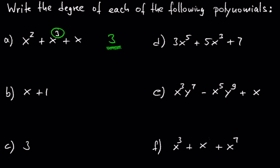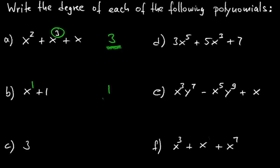In B we have x plus 1. The degree of x is 1 and the degree of 1 is 0. So the degree of the entire polynomial is 1. In C we have the constant term 3, which means the degree of the polynomial is 0.